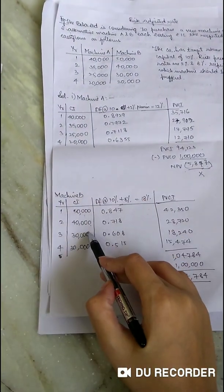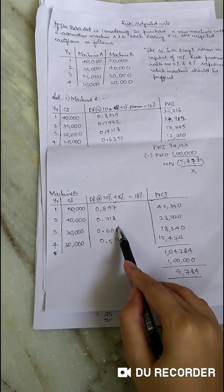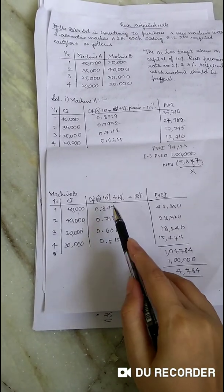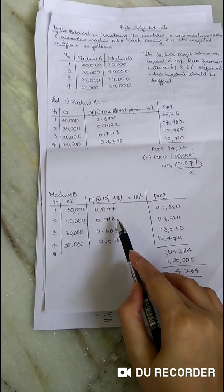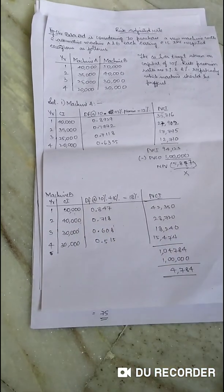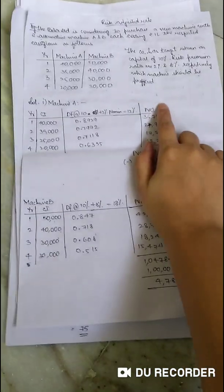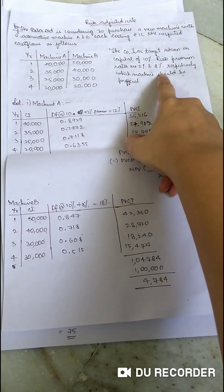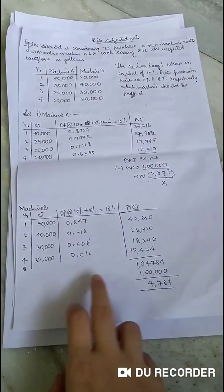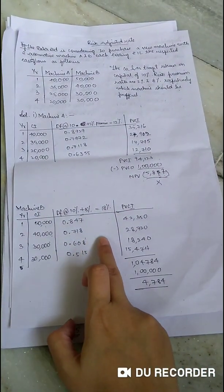Now coming to machine B, again we are taking the cash inflows given in the problem, and again we will be calculating the present value added with your risk factors. That is 10% as given in the question plus 8% respectively is given as a risk premium for machine B. So 10% plus 8% is how much? 18%.